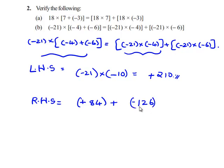Therefore positive 84 plus positive 126 gives positive 210. We can see that the values on the left hand side and right hand side are equal. This proves the distributive law of multiplication over addition.